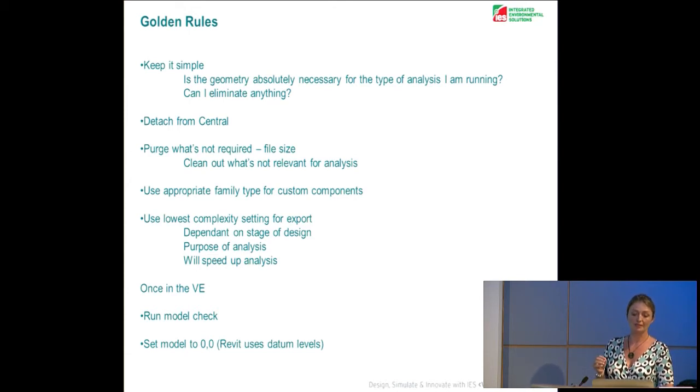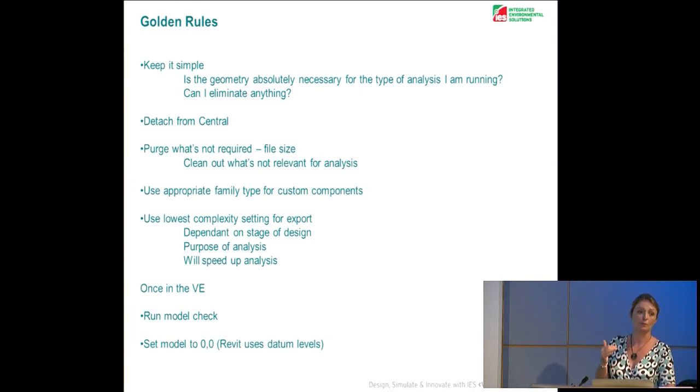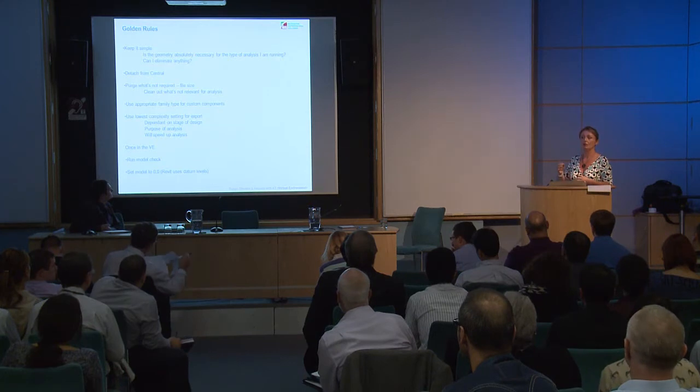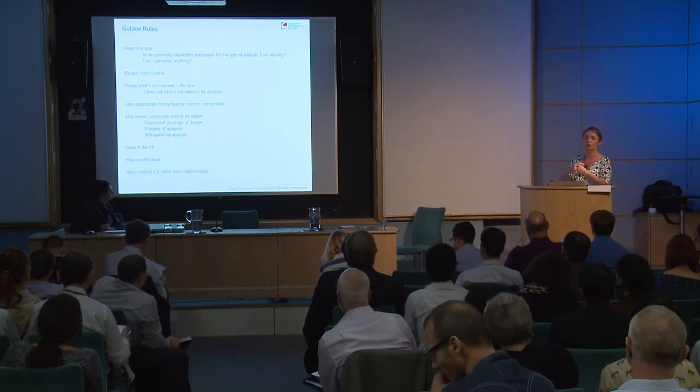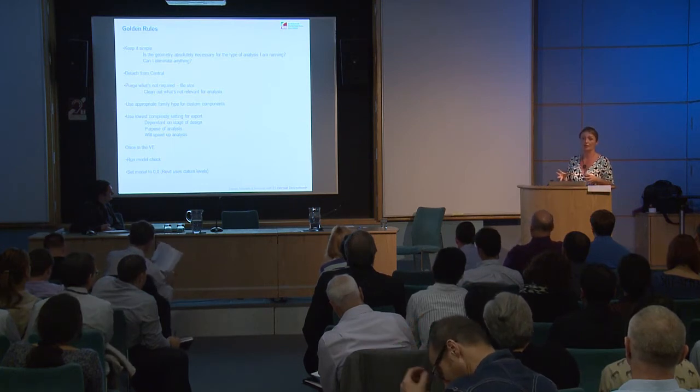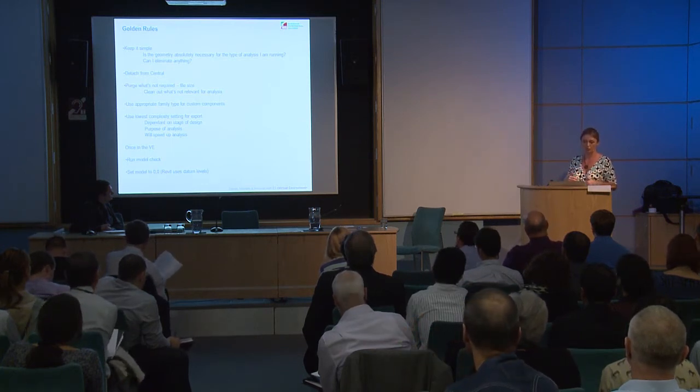Use the lowest complexity settings. Within Revit, if you are setting up the export, you've got five different levels of complexity to choose from. Really always use the simple geometry one if you can — it greatly reduces the number of surfaces that the model is then trying to process. When you come across from Revit, the virtual environment is trying to read every single surface in that model, and that is where it falls down or takes a long time. Unless you need the mullions in detail for a detailed radiance analysis, it is very unlikely you need the most complex level of detail for export.